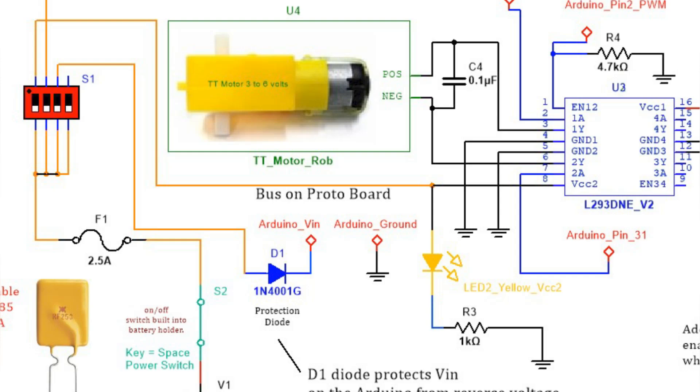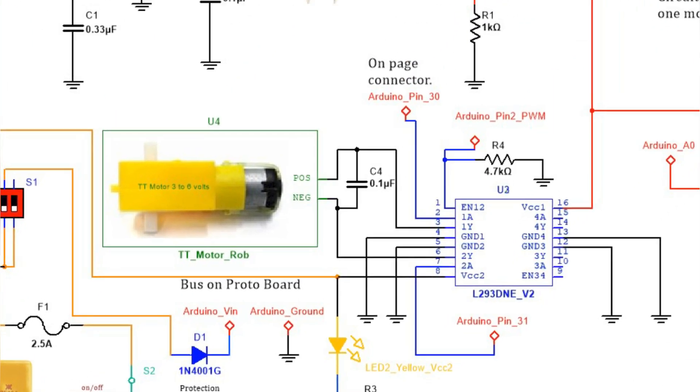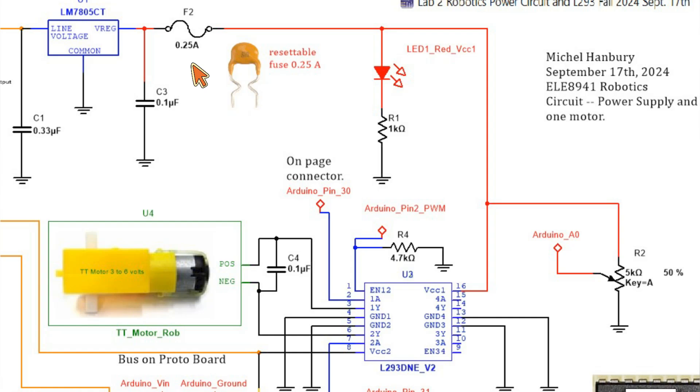You'll notice that the output of the regulator also goes through a fuse, but this time a much lower current rating, 0.25 amps. Then to a red LED to let you know you have a 5 volt supply with a current limiting resistor.